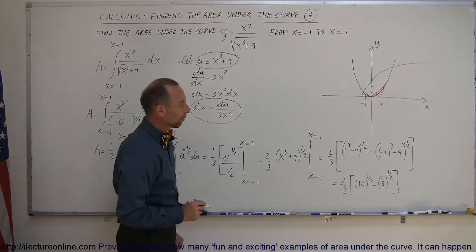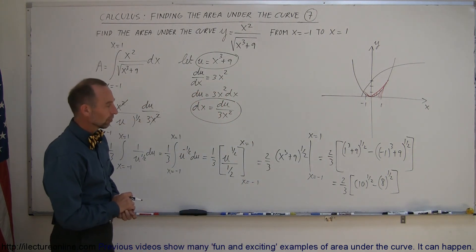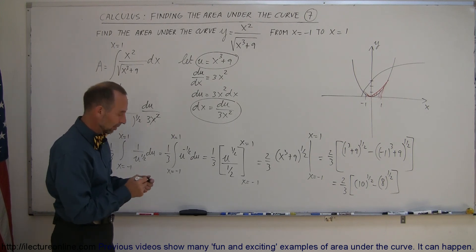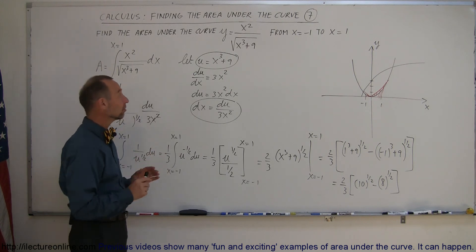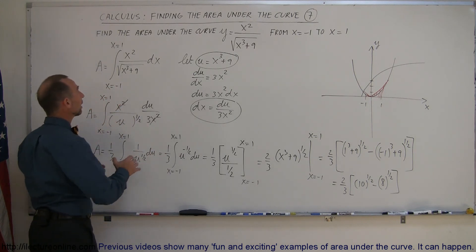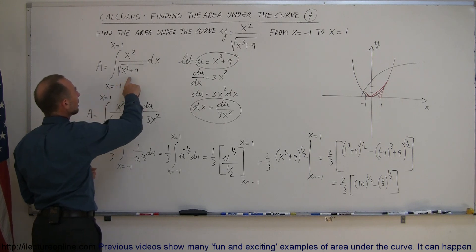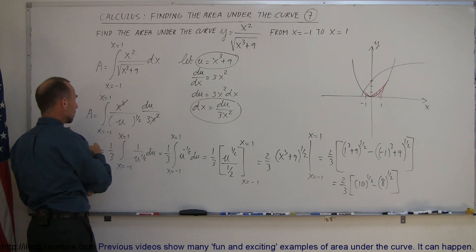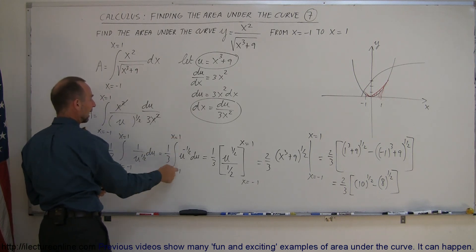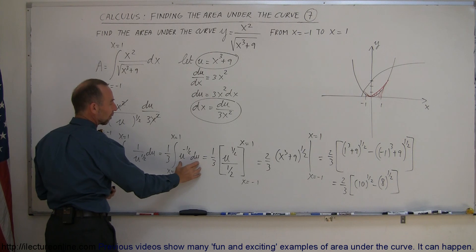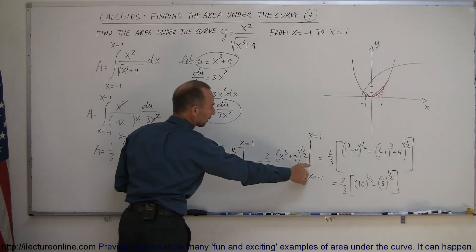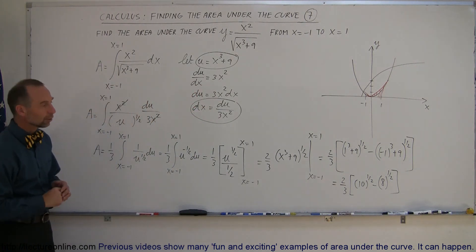This simplifies to 2/3 times the square root of 10 minus the square root of 8. I'll leave it like that — we could simplify the square root of 8 slightly further, but the technique is what matters. Notice that we had an integral requiring u-substitution. After integrating in u, the limits were still in x, so we had to back-substitute before applying the limits to get the final answer. And that's how you do it.